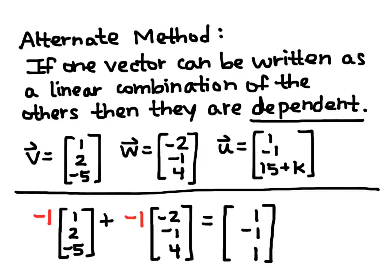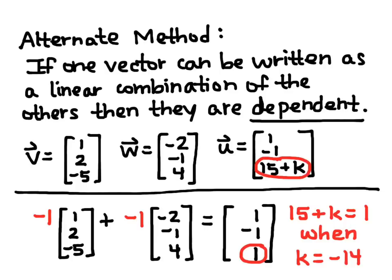Notice the top two entries are identical to U, and then if I make 15 plus K equal to 1, then K is equal to negative 14.